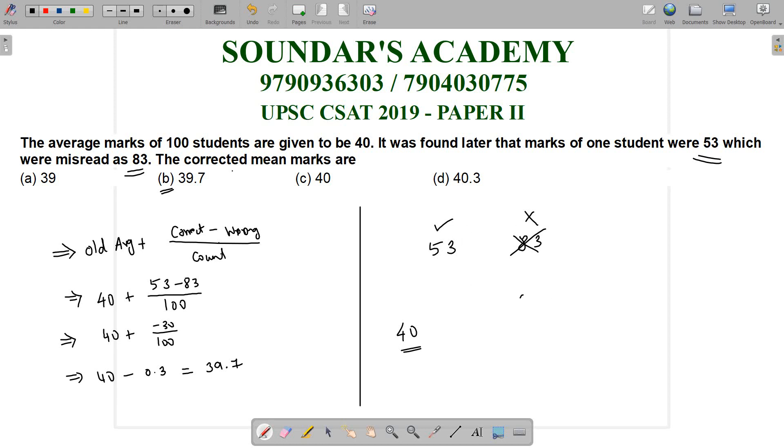The difference is 30 marks less. For 100 students, 30 marks shortage means 0.3 equal sharing shortage per student. Already 40 minus 0.3 equals 39.7, option B. Thank you.